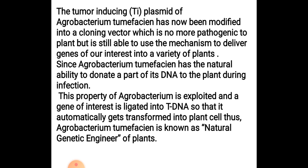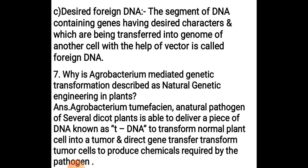Agrobacterium tumefaciens has a natural ability to donate a part of its DNA to the plant during infection — this is how tumors are induced. We have taken the tumor-inducing gene of interest and used this as a vector. It is no longer pathogenic. This property of Agrobacterium is exploited and the gene of interest is ligated into T-DNA so that it automatically gets transformed into the plant cell. Thus, Agrobacterium tumefaciens is known as the natural genetic engineer of plants.